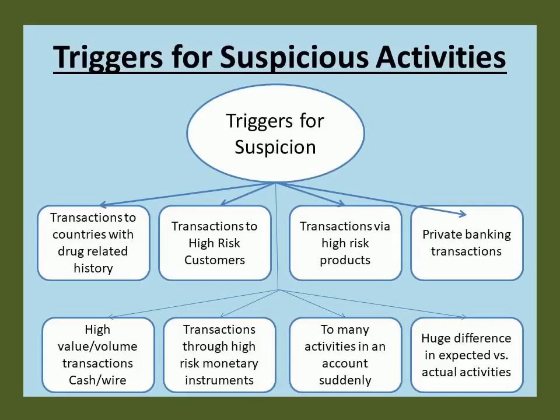Moving ahead, let us understand the suspicious transaction activity triggers: 1. Countries noted for corruption or drug trafficking. 2. Transactions to high-risk customers such as Money Services Bureau, Cash Intensive Business, and Shell Companies. 3. Transactions via high-risk products such as ACH and Lockbox. 4. Transactions to high-risk customers such as PEPs. 5. Correspondent banking and private banking transactions. 6. Transactions to sanctioned countries or routed through sanctions countries. 7. High-value or high-volume cash transactions. 8. High-value or high-volume wire transactions. 9. Transactions through high-risk monetary instruments such as demand drafts, pay orders, and travelers' checks.